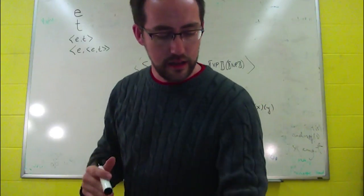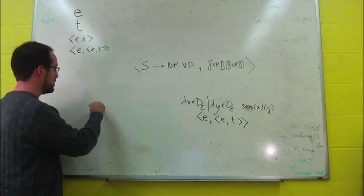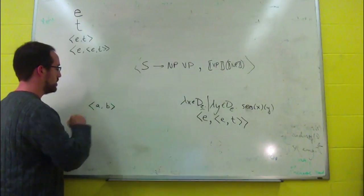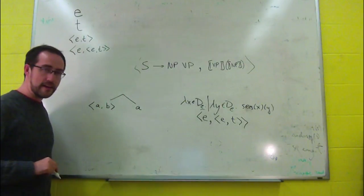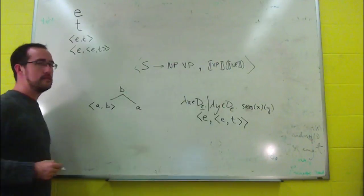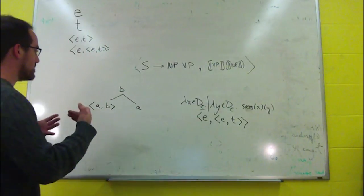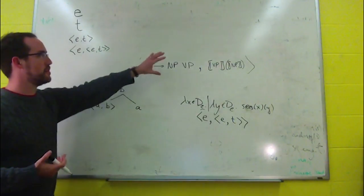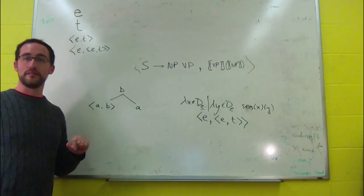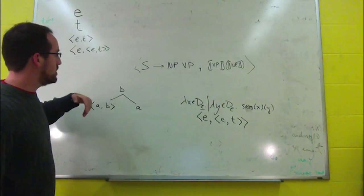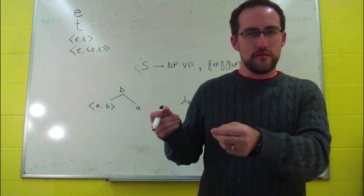One of the things we can determine about types is that any time you have a function of type AB, and its sister is of type A, then the mother will be of type B. And we can thus say — instead of having all these different rules — that any time you have this kind of structure, functional application applies. And we'll be able to make that kind of determination for the other rules as well.